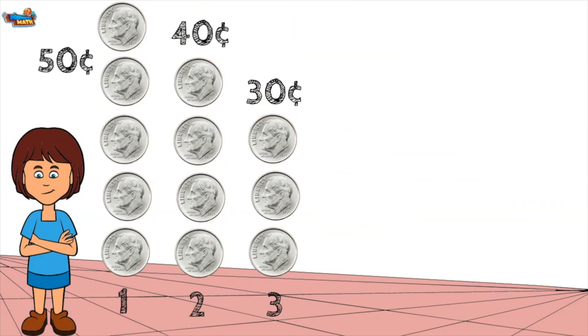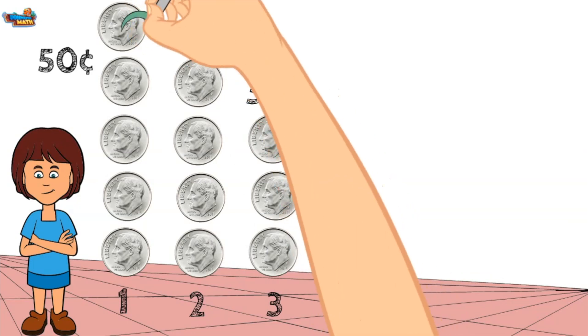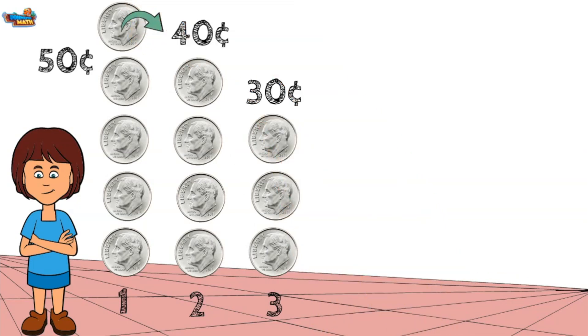To determine the rule, I find the difference between group 1 and group 2. There are 10 cents less in group 2 compared to group 1. There are 10 cents less in group 3 compared to group 2. The value of the coins is decreasing by 10 cents. The rule is minus 10.